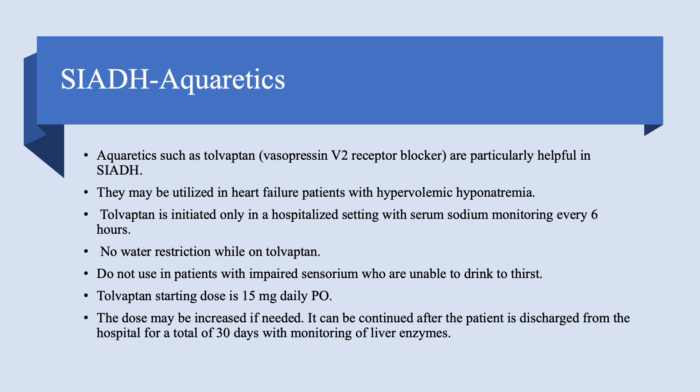There is also conivaptan, which is IV and used less frequently. Tolvaptan's trade name is Samsca. The dose can be increased if needed. The medication can be used up to 30 days after discharge, but liver enzymes must be monitored. The same medication at a higher dose with a different name is now approved for polycystic kidney disease. Use of tolvaptan requires experience — defer to a specialist such as a nephrologist if you haven't used it.